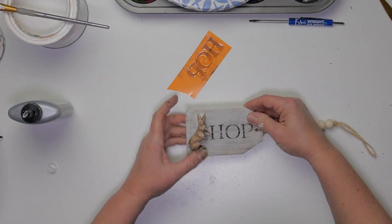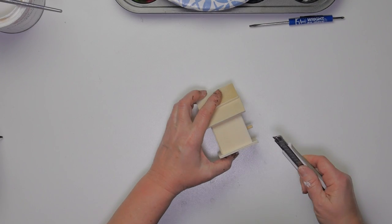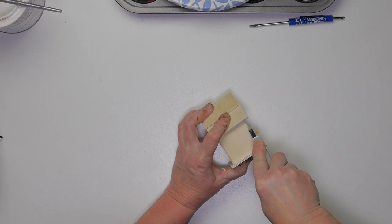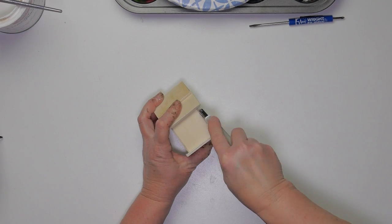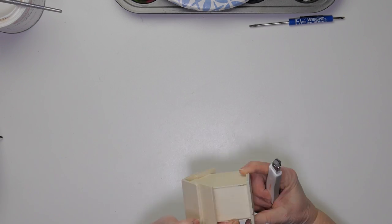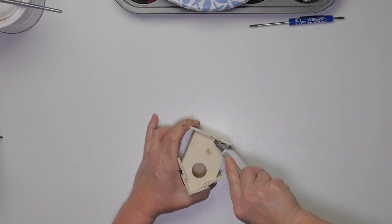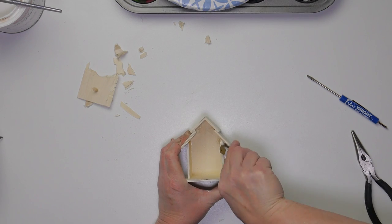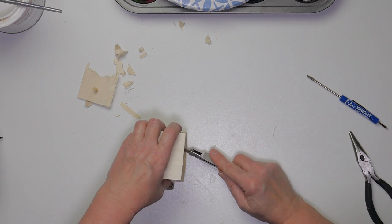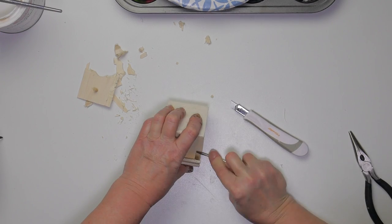I picked up a couple of birdhouses at the Dollar Tree and with this one I'm taking off the front so that I can put some embellishments inside. I'm going to clean it up a bit with the razor and with some sandpaper and then I'm going to paint the whole thing white.